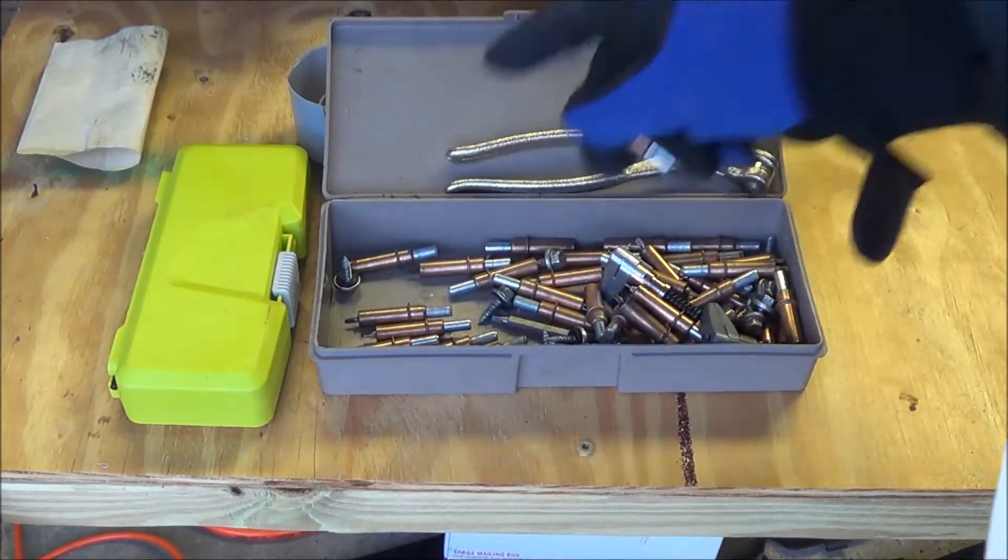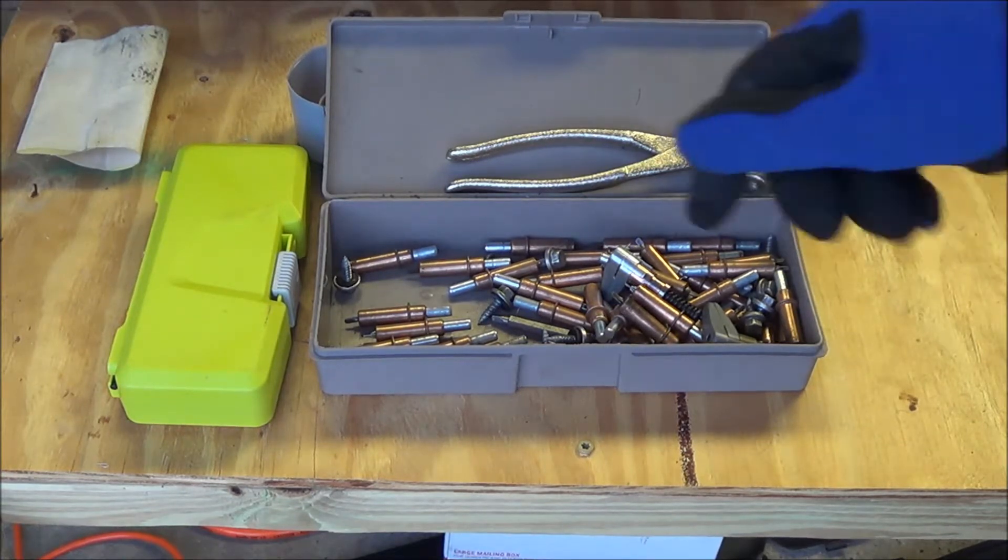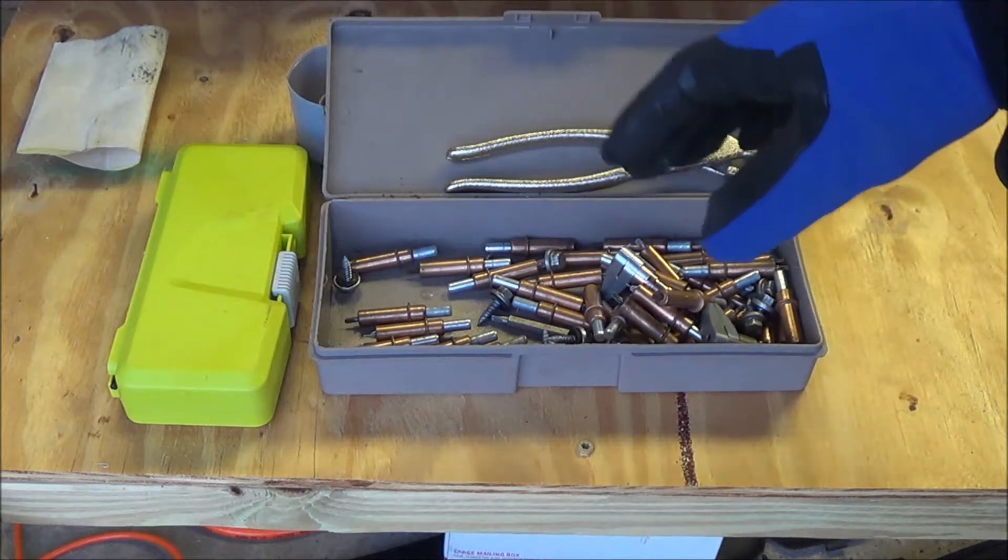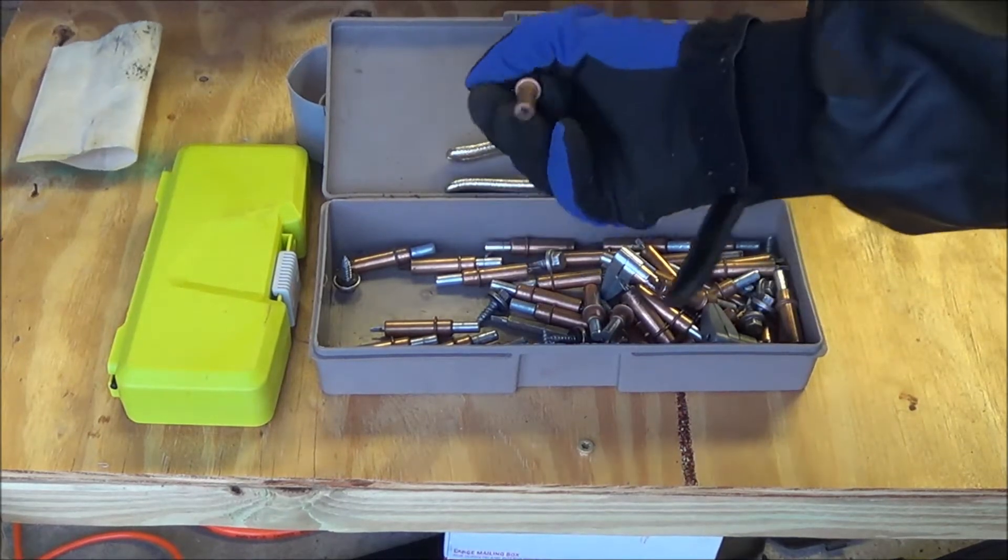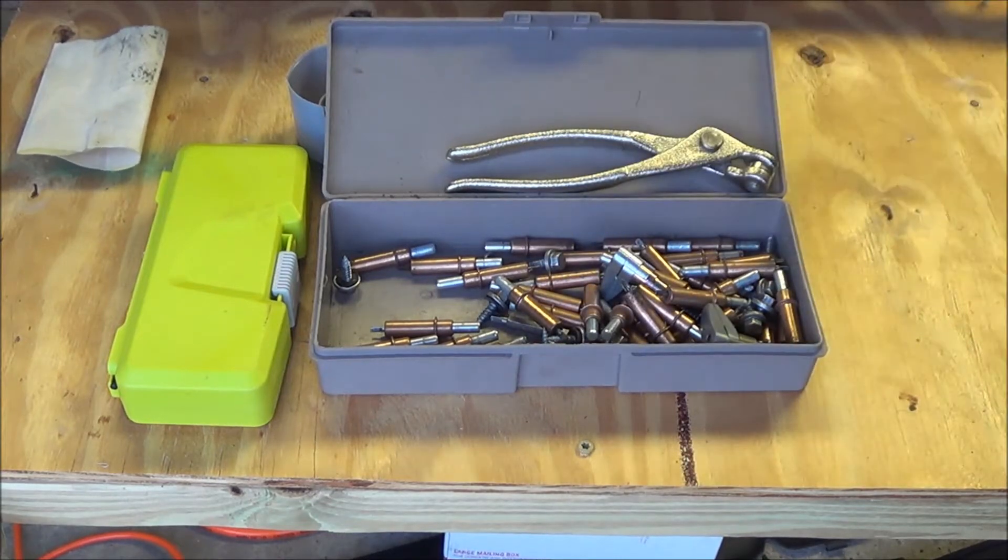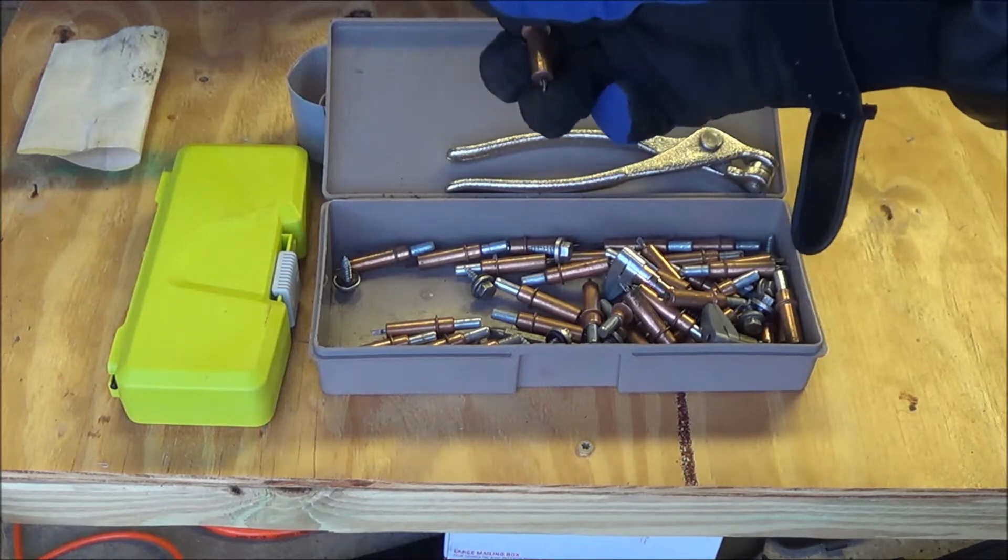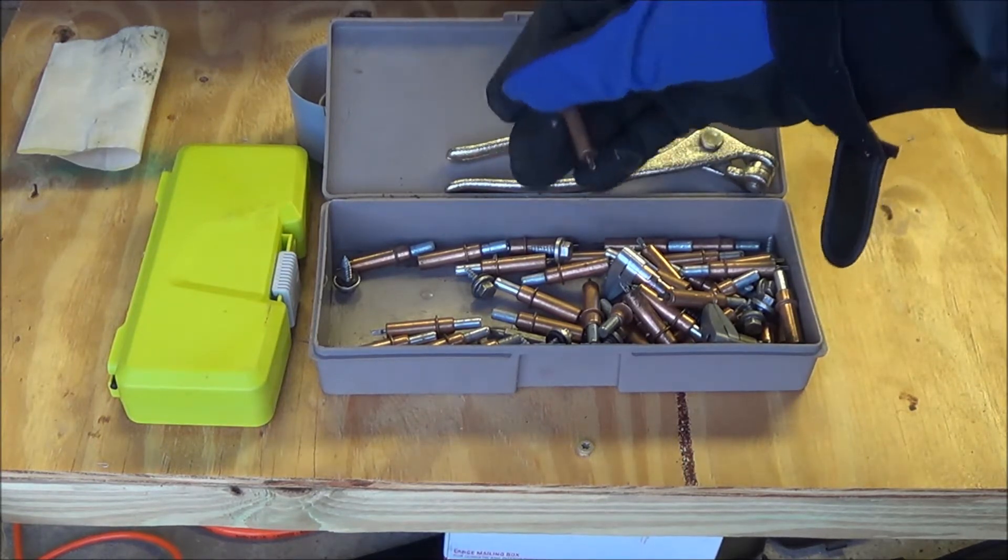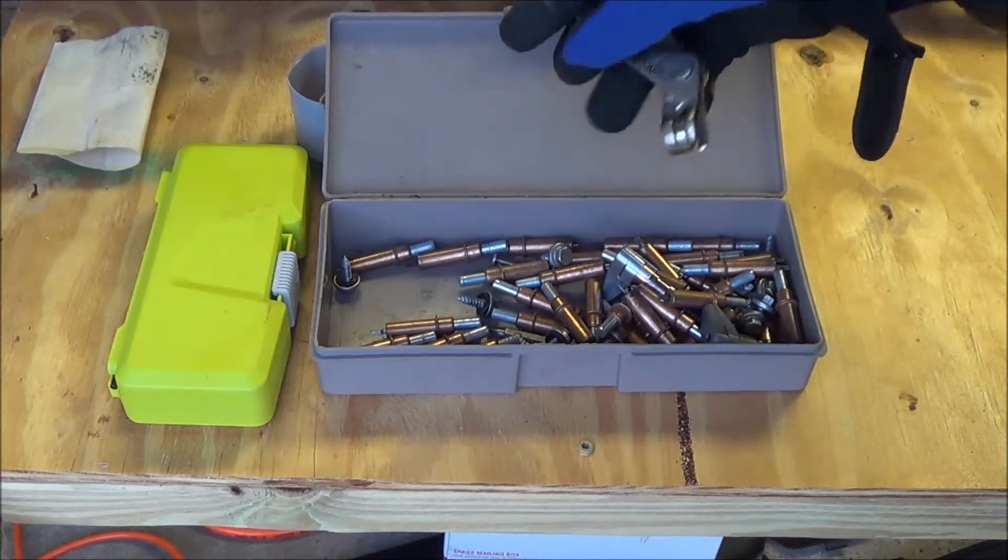Glicos are basically used to hold two sheet metal panels or auto body panels together while you're welding. It keeps the panels firmly together and aligned as you weld. These particular Glicos are an eighth of an inch in size and they hold around 20 pounds per Glico. I use these to put my floor pans on and also a patch panel that I made on the wheelhouse.